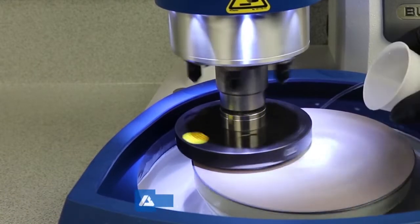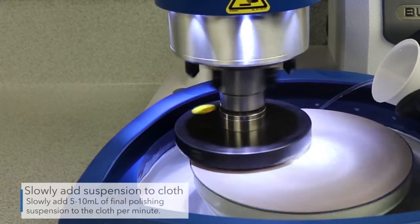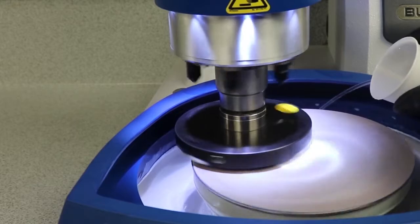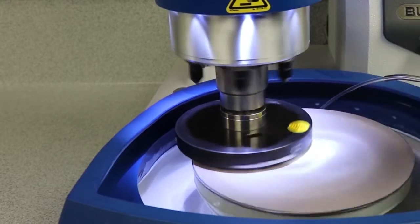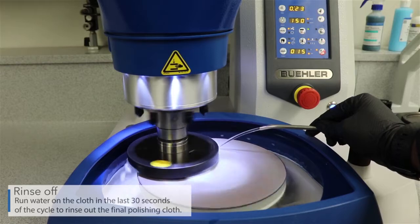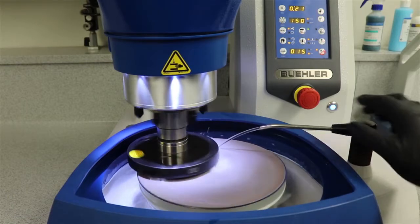During the cycle, slowly add 5 to 10 milliliters of final polishing suspension to the cloth per minute. Run water on the cloth in the last 30 seconds of the cycle to rinse out the final polishing cloth.